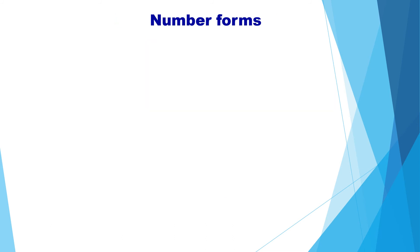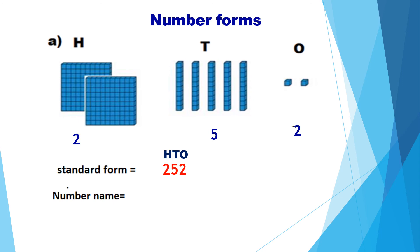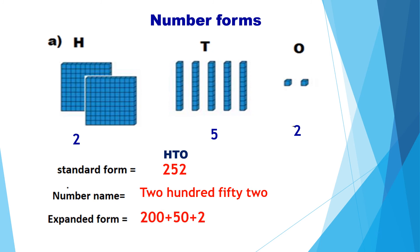Now let us see the number forms — how to represent a number using the blocks. The number shown using the blocks has two hundreds, five tens, and two ones. Therefore, the number is 252. That is the standard form: 252. Writing in the word form: two hundred fifty-two. And the expanded form is 200 plus 50 plus 2.